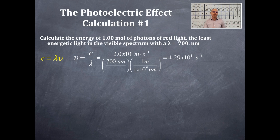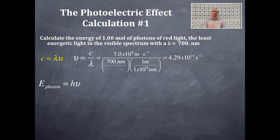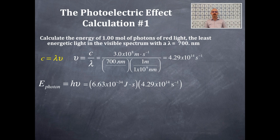Now we calculate the energy using E = hν, where E is energy per photon, h is Planck's constant, and ν is the frequency we just solved for. We plug in Planck's constant and the frequency. The units of seconds cancel out in both, leaving joules per photon. That gives us 2.85×10⁻¹⁹ joules per photon.